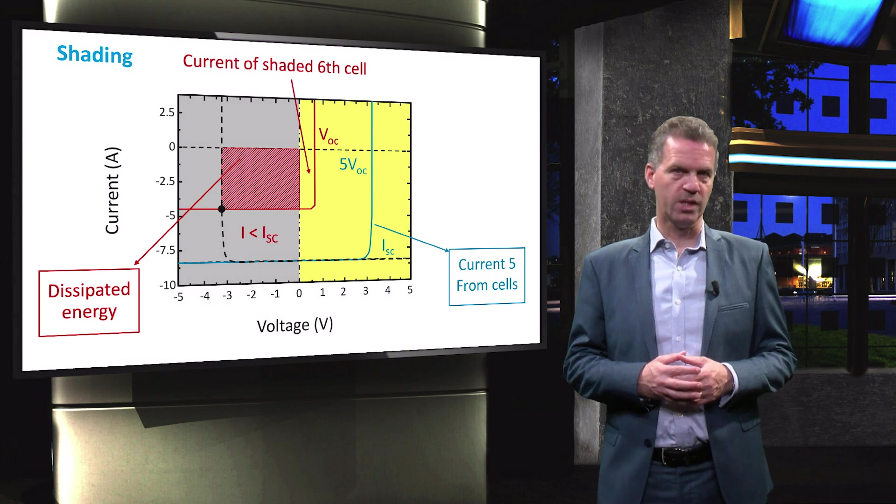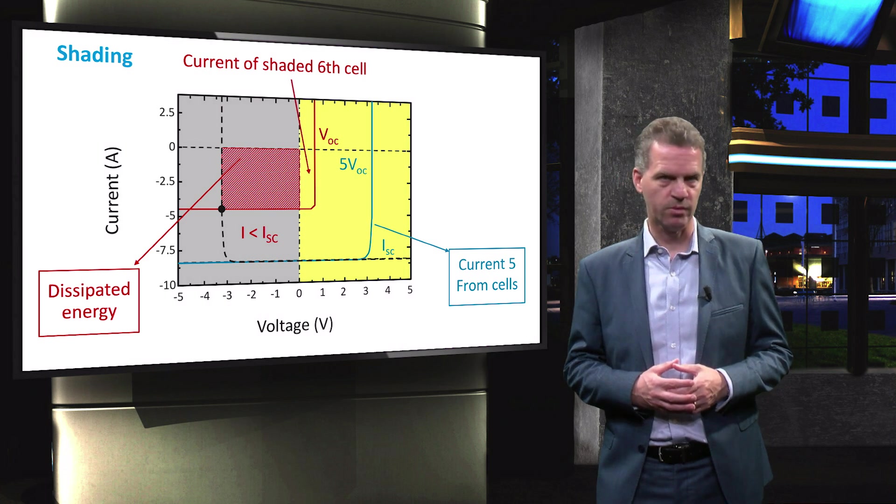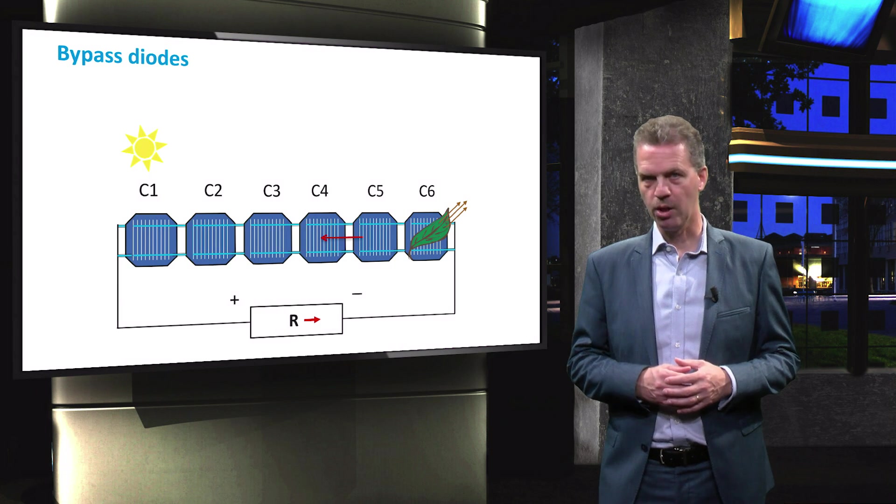If the temperature of the cell is increased to a critical level, the encapsulation of the cell might crack or wear out. This can be prevented with so-called bypass diodes.